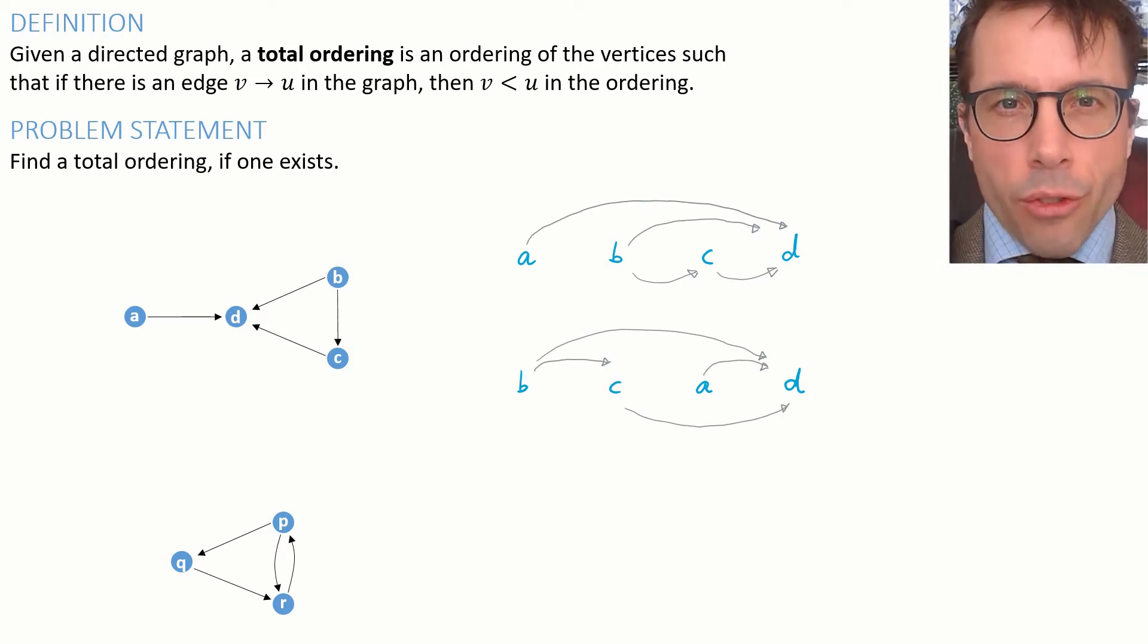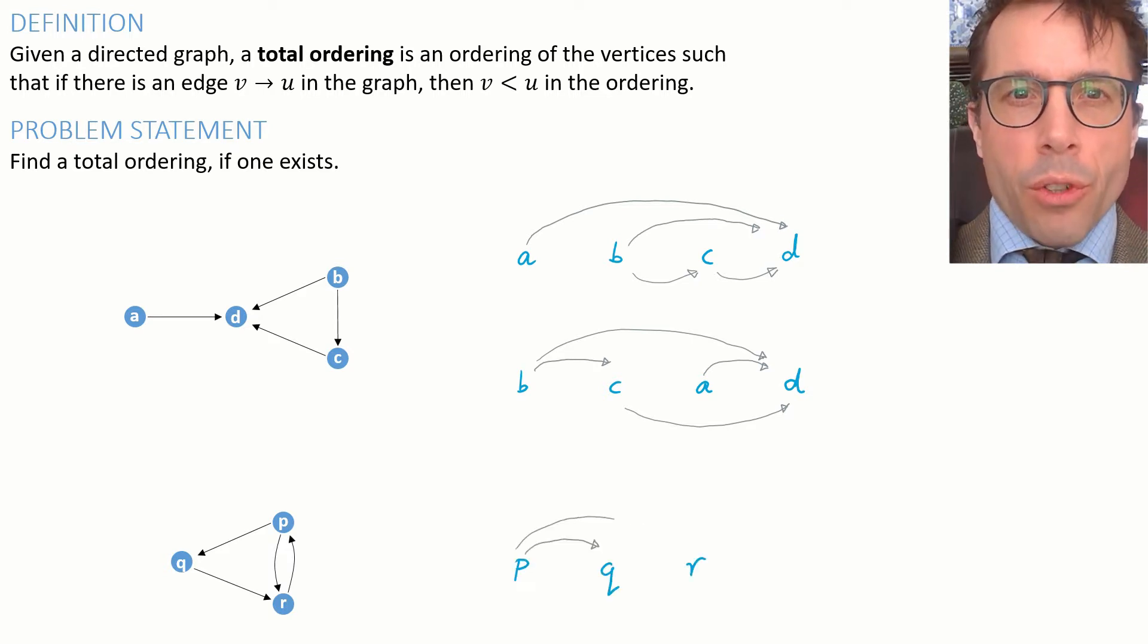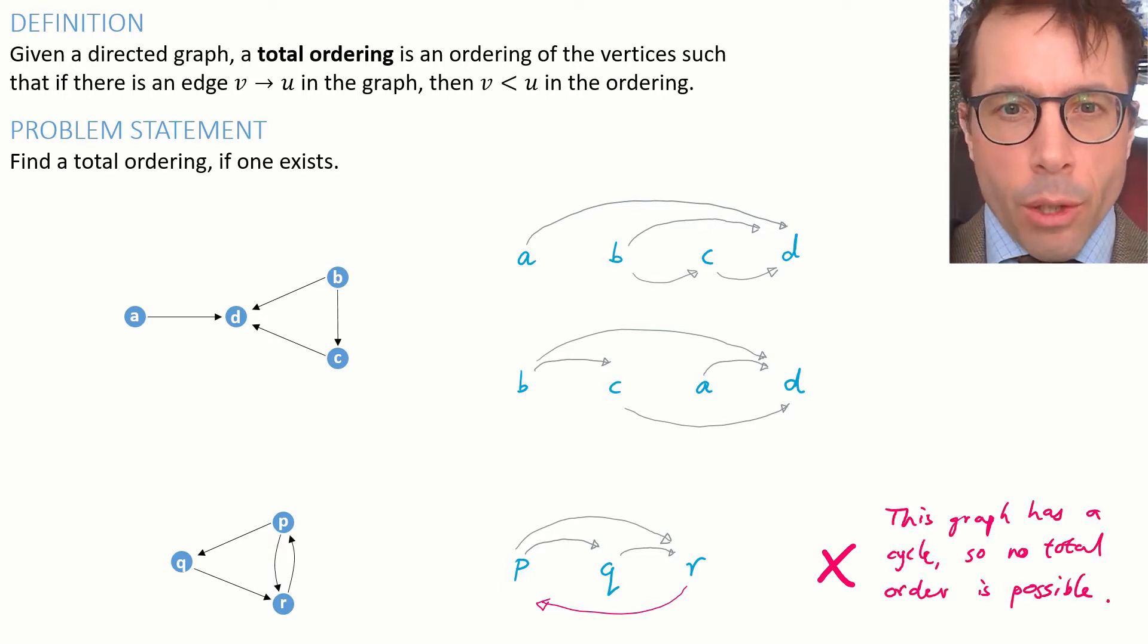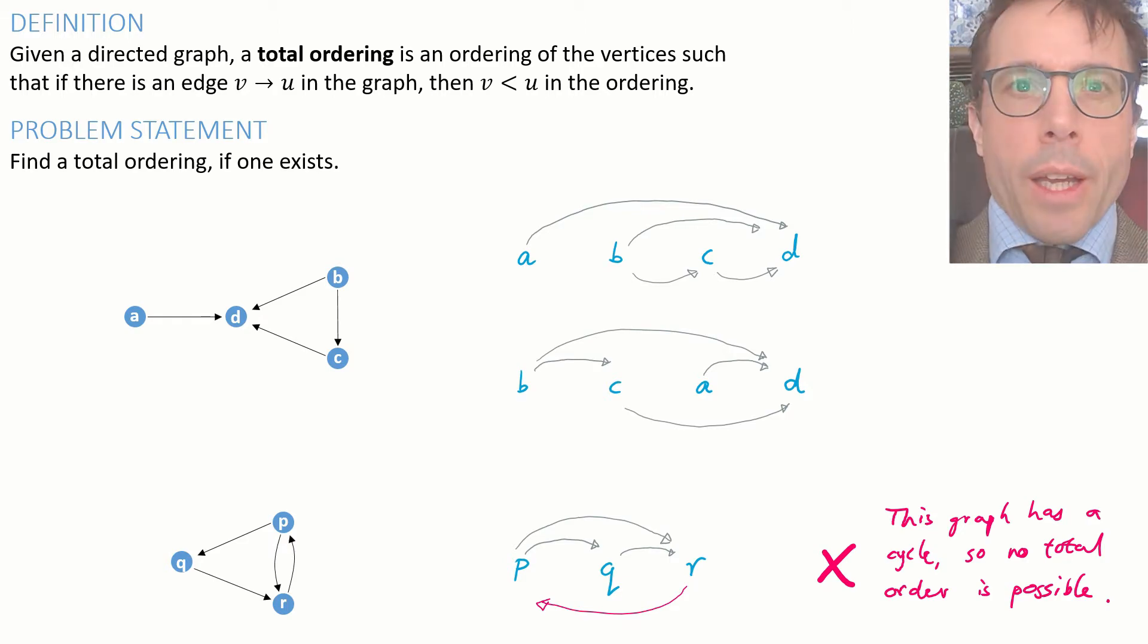For the top graph, there are several total orderings you might have found, like these two. For the bottom graph, you might start out with an ordering that looks promising, but there's always some edge that points the wrong way.